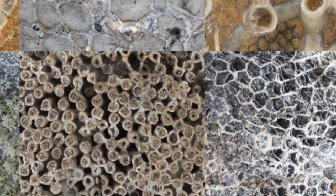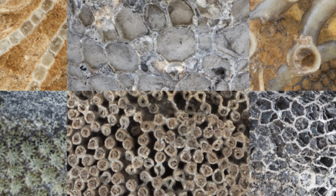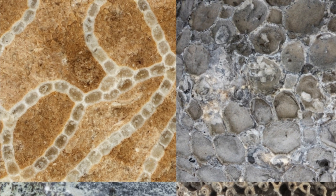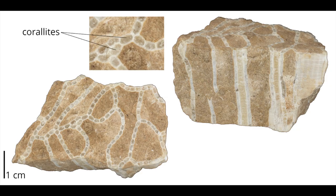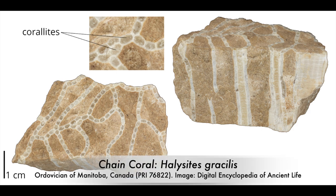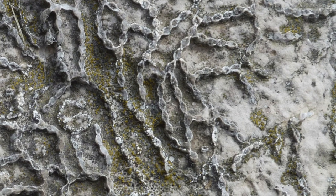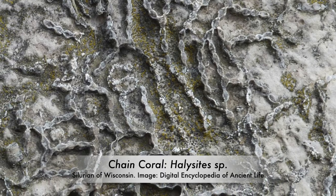Not all tabulate corals look like honeycombs. In fact, tabulate corals had a diversity of forms. Some had coralites that were only attached along two or three edges, giving them a chain link-like appearance when viewed from above. They are conveniently called chain corals and are assigned to the genus Halicites. This specimen is from the Silurian of Wisconsin.